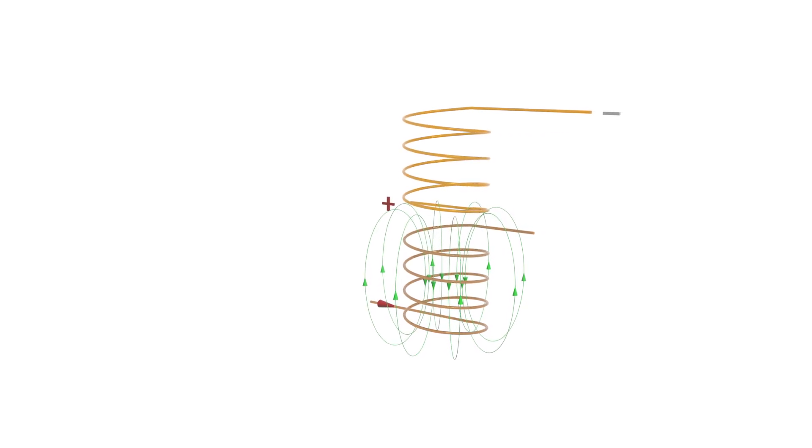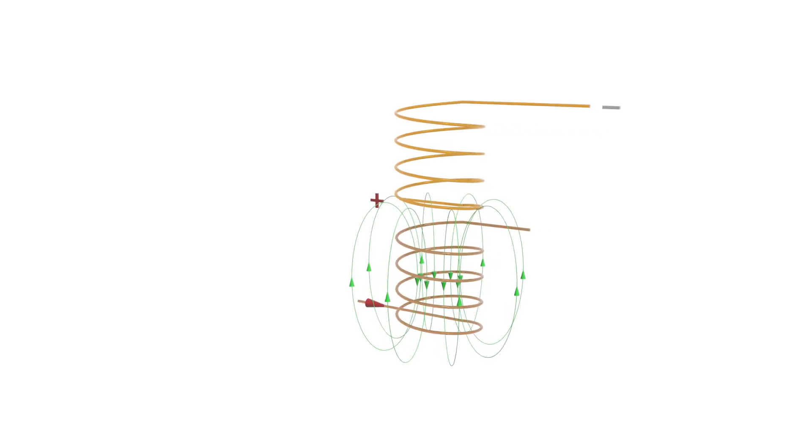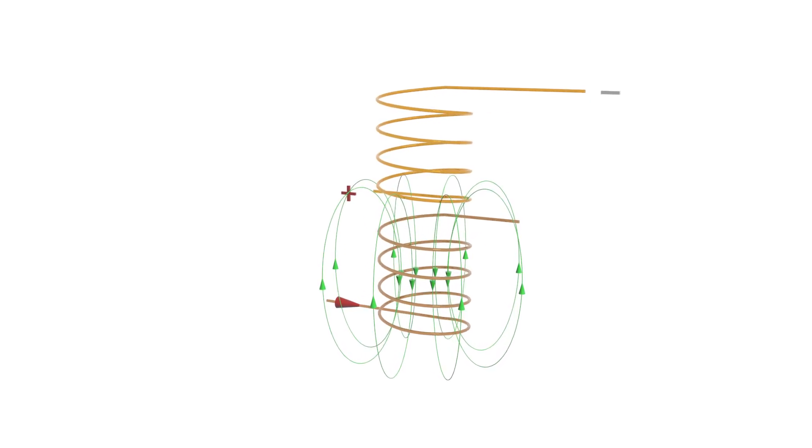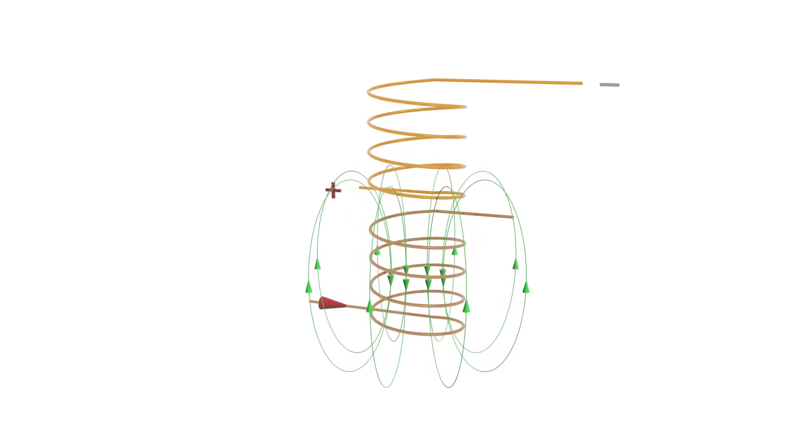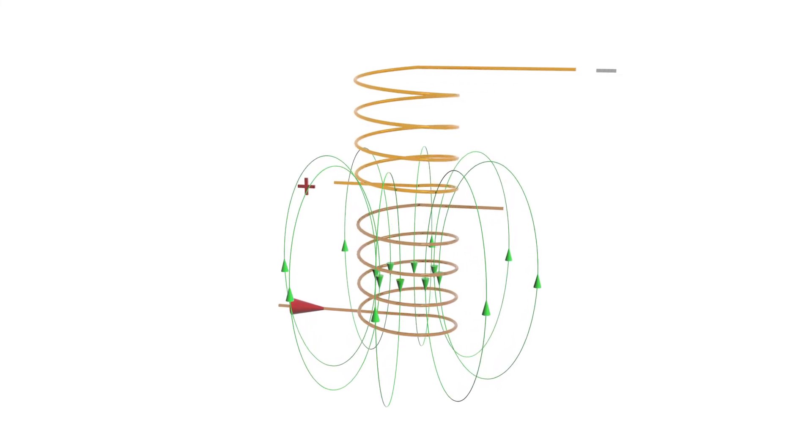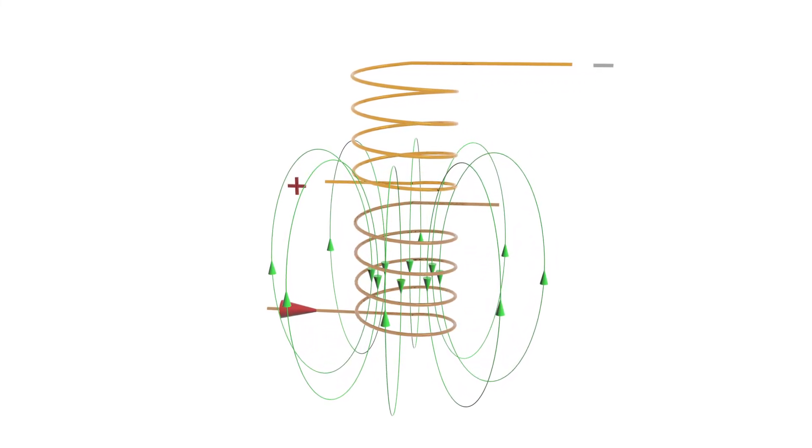You may have noticed that there's no magnetic field around the new inductor. This is because there's no electric current through it. But as there's a voltage between its terminals, if we connected it in a circuit, a current would flow through it, generating a magnetic field.